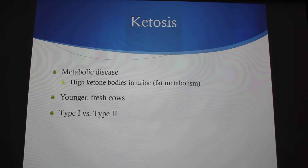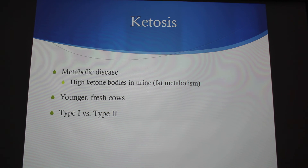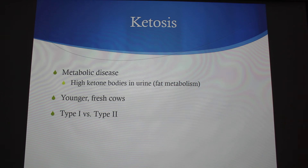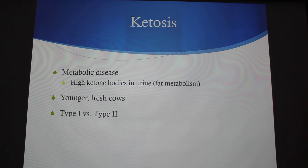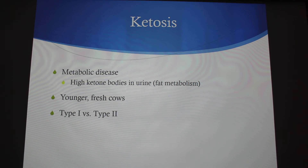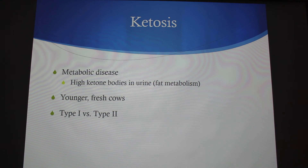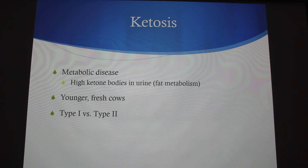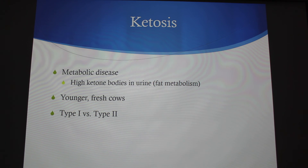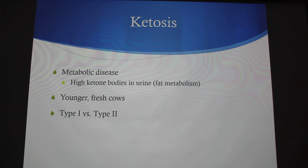Similarly for ketosis, treatment is glucose or propylene glycol for three or four days to increase feed intake and correct the negative energy balance. Ketones can be detected in milk or urine using keto strips — just like pH strips for a pool, they change color. Some people can actually smell ketosis on the cow's breath, urine, or milk when it's really bad. It smells acidic.